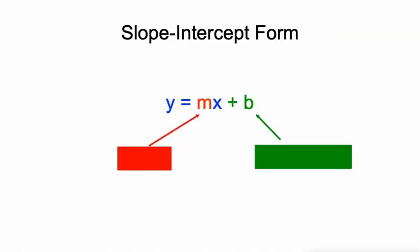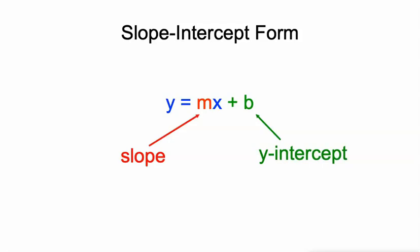First of all, slope intercept form, quick review. It's this form, y equals mx plus b, where m is our slope, our rise over our run, our change in y over change in x, our constant rate of change, and b is our y-intercept, the value of y when x is zero, our starting point.